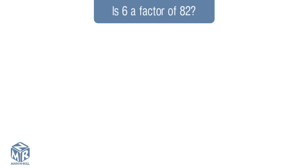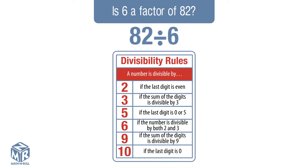Is 6 a factor of 82? 6 would be a factor of 82 if we can divide 82 by 6 without a remainder. Let's use the divisibility rules table to help us solve. We find 6 on the table because we're dividing by 6. The divisibility rules state a number is divisible by 6 if the number is divisible by both 2 and 3. Let's check if 82 is divisible by 2. A number is divisible by 2 if the last digit is even. The last digit of 82 is 2, which is an even number, so 82 is divisible by 2.